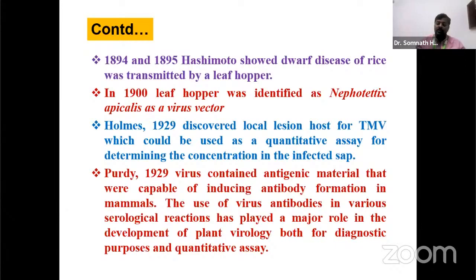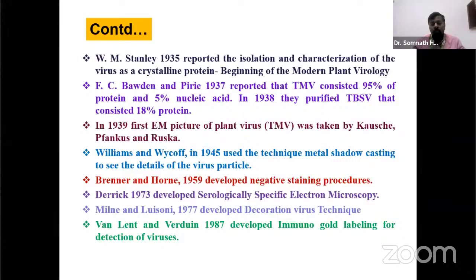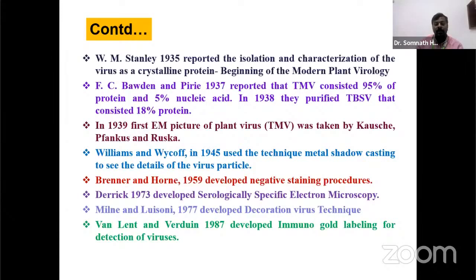Another important discovery in plant virology: in 1935, WM Stanley reported the isolation and characterization of virus as a crystalline protein — the first crystallization of plant viruses. In 1946, he received the Nobel Prize in Chemistry for this discovery. This was the beginning of modern plant virology.